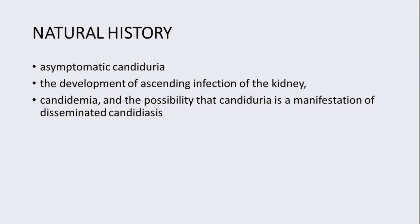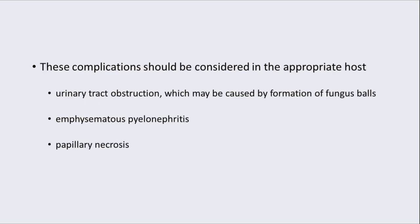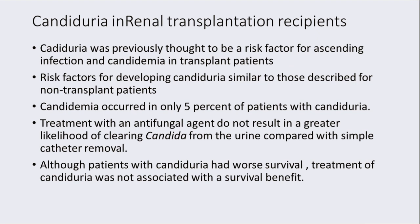The natural history of fungal UTI includes asymptomatic candiduria, the development of ascending infection of the kidney, candidemia, and the possibility that candiduria is a manifestation of disseminated infection. In the appropriate host, urinary tract obstruction, emphysematous pyelonephritis, and papillary necrosis should also be considered. Candiduria in renal transplant recipients was previously thought to be a risk factor for ascending infection and candidemia. Treatment with antifungals is not associated with significant survival benefit, although patients with candida have worse survival.